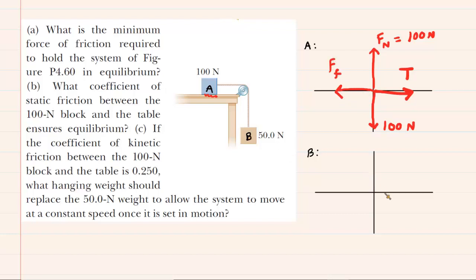Next, we can do the free-body diagram for block B. We've got the downward gravitational force once again. This is 50 newtons in this case.